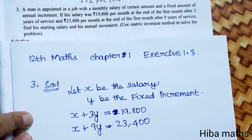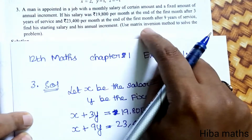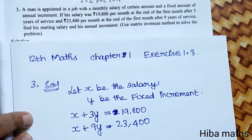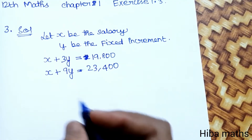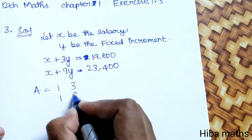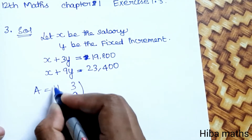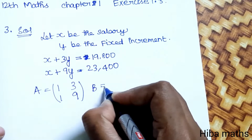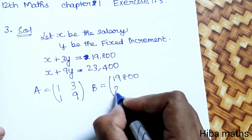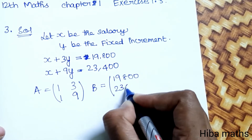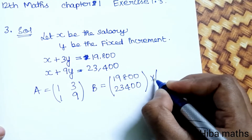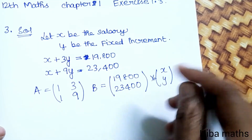We will solve using the matrix inversion method. We set up a 2 by 2 matrix. A is equal to [1, 3; 1, 9], B is equal to [19800; 23400], and X is equal to [x; y].